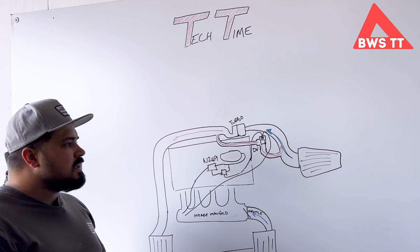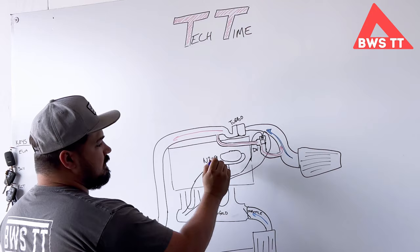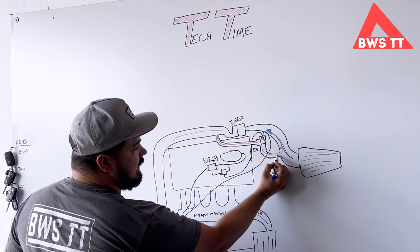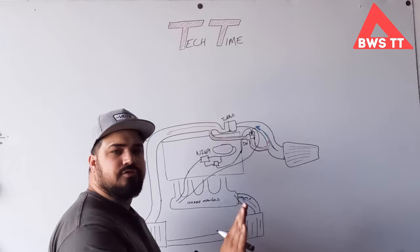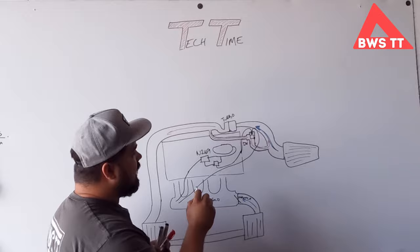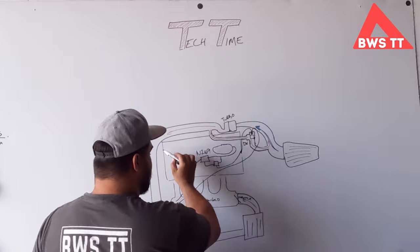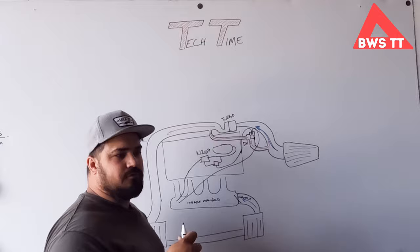And what it was saying was that under part throttle, the N249 can control the diverter valve to allow this cold air to come in this way and bypass the turbo at part throttle. Now the reason for that is because at partial throttle, you don't want the restriction of the turbo stopping air getting into the system. So that makes sense. And I can get on board with why that would be a good thing for economy and for part throttle driving.